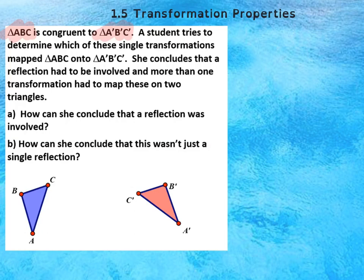She concludes that a reflection was involved, and that it had to have happened that there was more than one transformation. Interesting. Take a look. How could she have concluded that a reflection was involved?